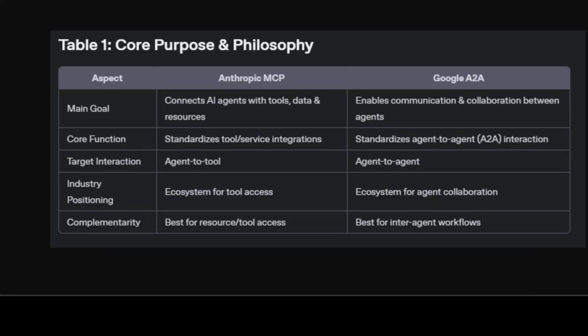First, let's clarify the foundational goals of MCP and A2A. MCP is designed to connect AI agents with the tools, datasets, and resources they need, creating a standardized way for agents to access structured inputs and outputs. Its real strength lies in helping AI agents access and use external systems like business tools or databases, making these connections much simpler and more reliable.